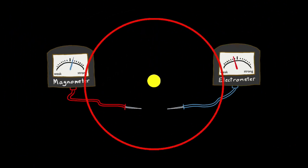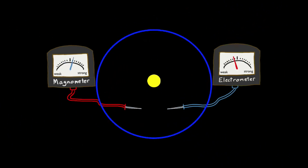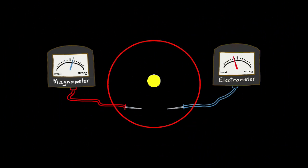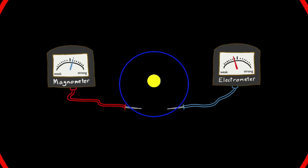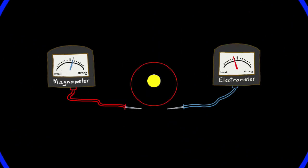As long as you have an energy source to keep that electron vibrating, those electromagnetic waves will keep propagating outward in all directions.